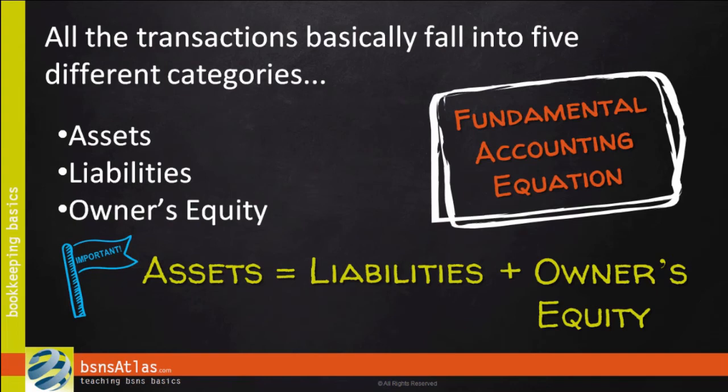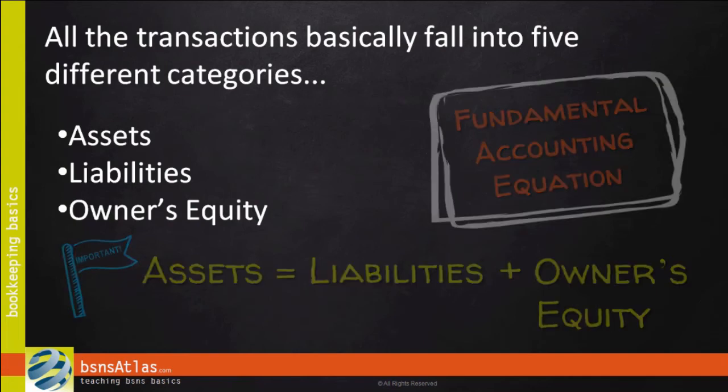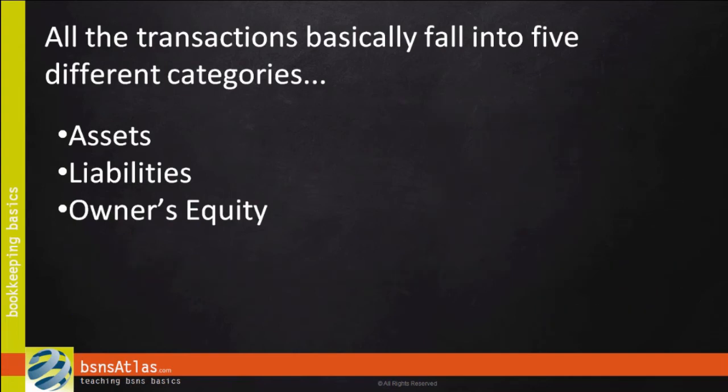If the company's assets go up on the left side of the equation, then the right side has to go up somewhere. So, so far we've talked about three of the five different groups. Assets, liabilities, and equity. And we've discussed how they have to always stay in balance with each other.